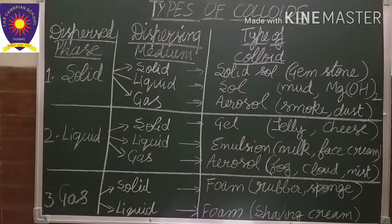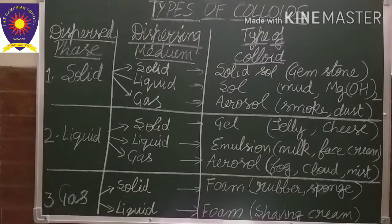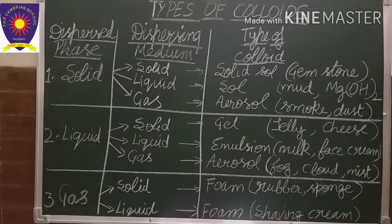Thirdly, when a solid is dispersed in a gas, that type of colloid is known as aerosol. Examples are smoke, dust, and automobile exhaust. These are all called aerosols because they contain unburned carbon particles or solid dust particles dispersed in gas.